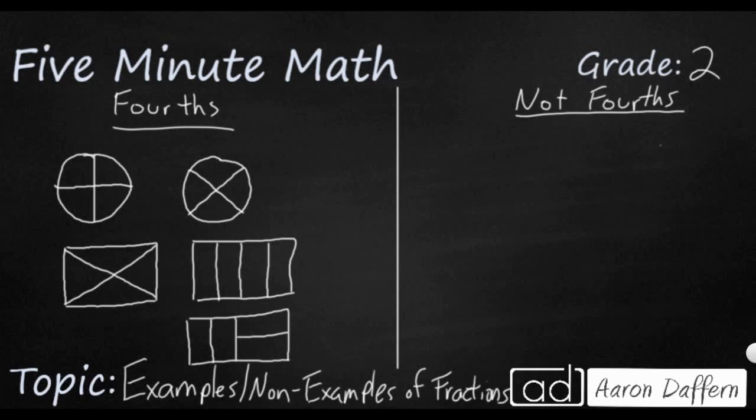And these four parts aren't necessarily congruent, but this is also a good example of fourths. Because they each take one fourth of a space, they might not, each shape might not be exactly the same shape. But they are the same size if you rearrange some parts.